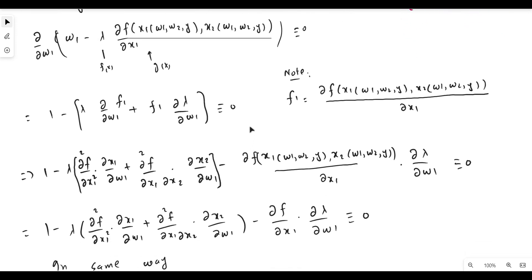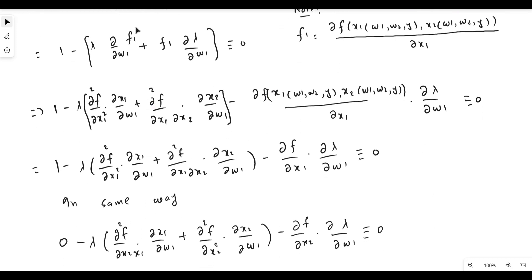Note that f1 is already the derivative of the production function with respect to x1. So lambda stays as it is, and the derivative term shows that a change in w1 leads to a change in x1, which changes f — yielding a second-order derivative. This is ∂²f/∂x1² times ∂x1/∂w1, plus the cross partial ∂²F/∂x1∂x2 times ∂x2/∂w1.